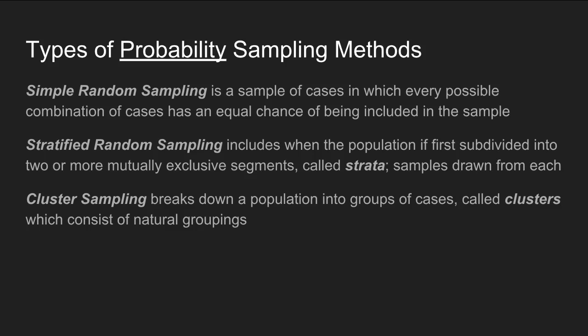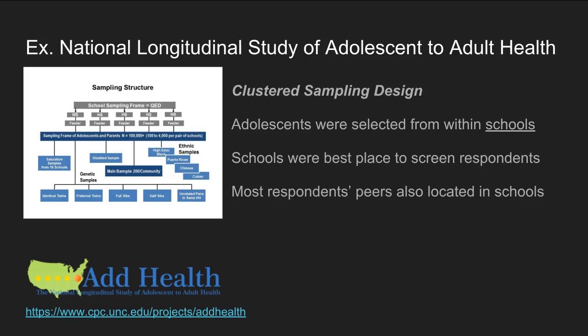Cluster sampling breaks down a population into groups of cases called clusters, which consist of natural groupings from which cases can be selected. The Add Health study is an example: researchers obtained a list of schools, and these schools represented the clusters from which adolescents were selected. Schools were chosen because the researchers were interested in adolescents' peer relationships, and most peers were located in the same schools — making schools a natural cluster.